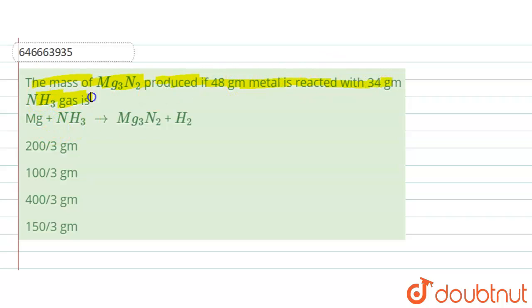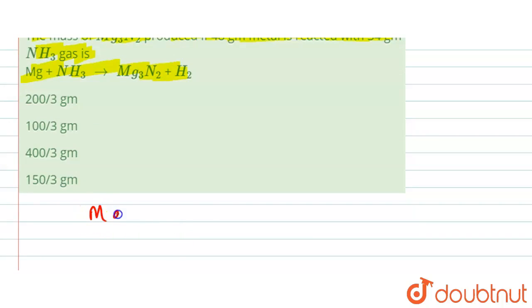Here we are given the reaction, so let's write it down. We have Mg plus NH3, here we have the formation of Mg3N2 plus H2.